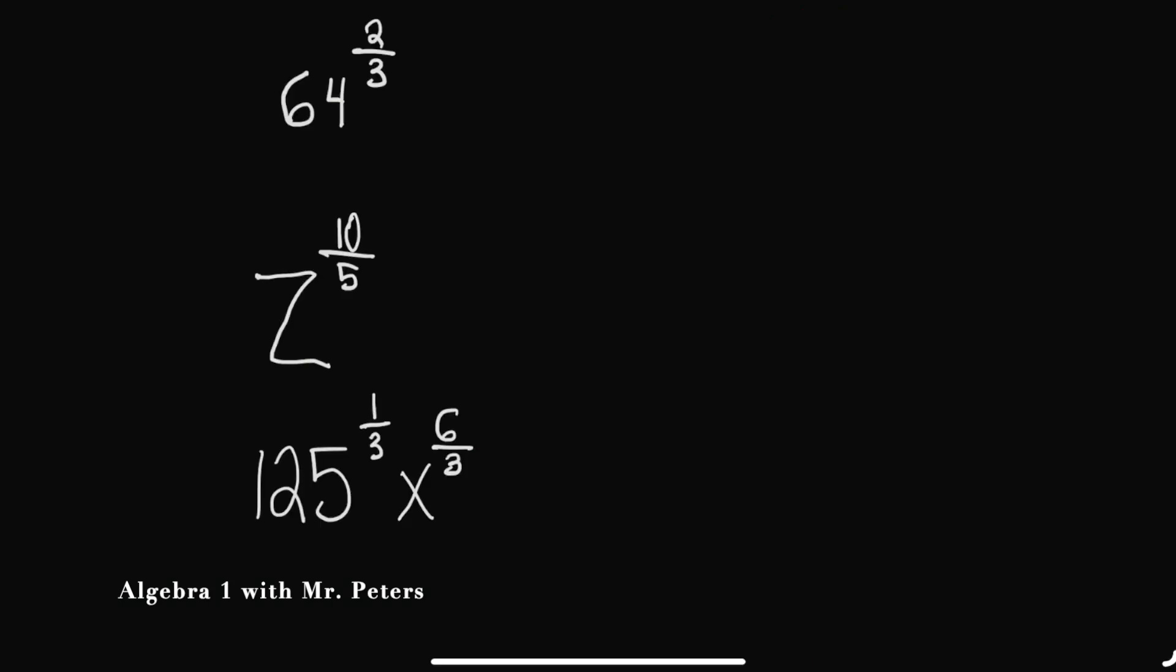Sometimes they want you just to switch it over. Sometimes you have to switch it over and simplify. As we go on to the next set of questions, we're now going to not only switch over from one form to the other, but we're going to have to simplify. So I know I have 64. The power is two, the root is three. In my previous video, I told you guys you could take 64 to the second power, then find its cube root, or you can find a cube root of 64 and then square it. I like to do whatever is easier for me. So I know the cube root of 64 is just four. And once I square four, my final answer is 16.